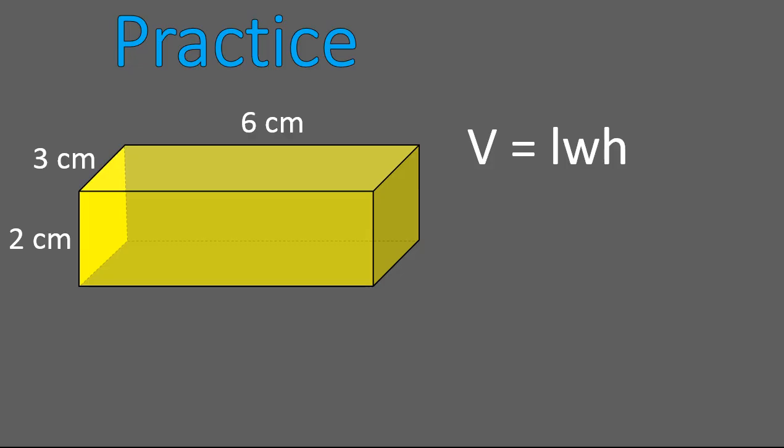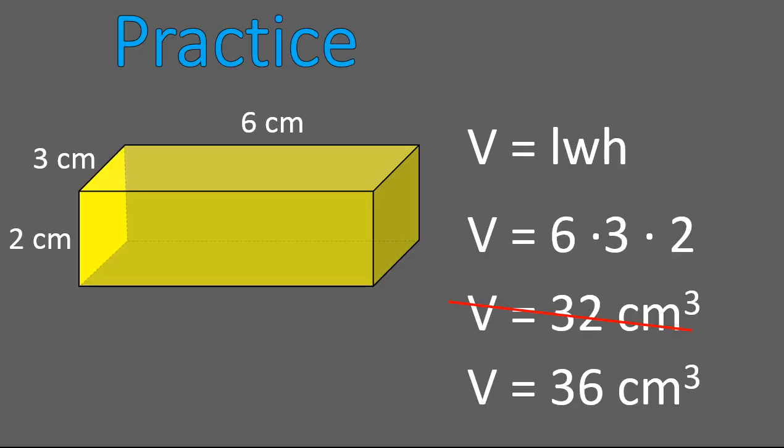And you're back. Here's the equation. Length times width times height. Six times three times two. Do you get 32 cubic centimeters? I hope not because that answer is wrong. I did that on purpose to throw you off in case you were just dozing off or something. What did you get when you multiplied those together? Hopefully it was not 32 cubic centimeters. But 36 cubic centimeters. That's what we were looking for.